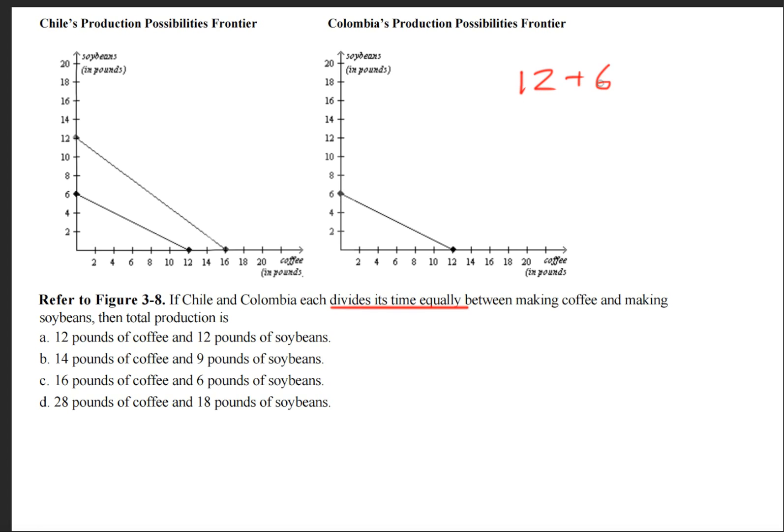So we can do 12 plus 6 divided by 2, and that gives us 9 soybeans.